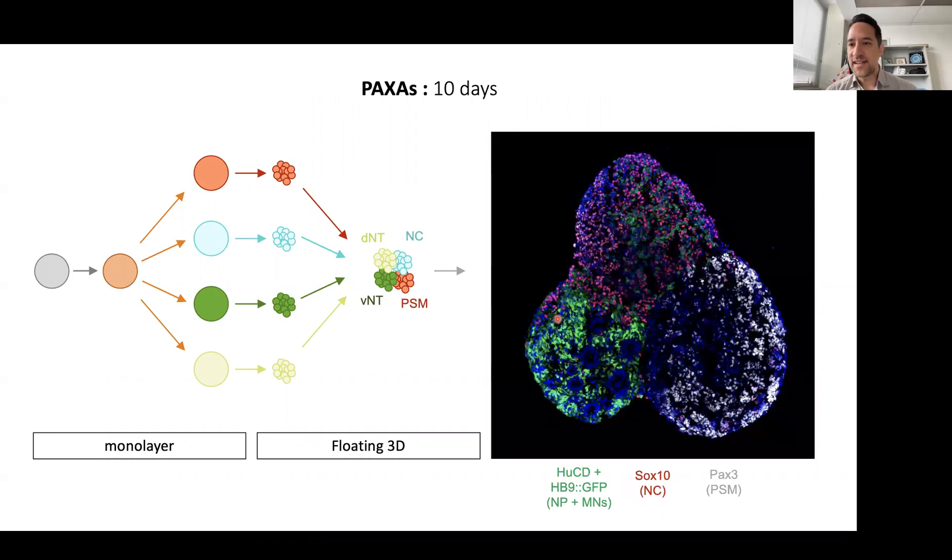At ten days, we started staining for the markers that we would expect to see in the different components. Here it's once again this Hb9 GFP line, but I've added on top in the same channel HUCD to stain all of the neurons. Here you'll have the motor neurons that are particularly green, and you find some other neurons up in this compartment.